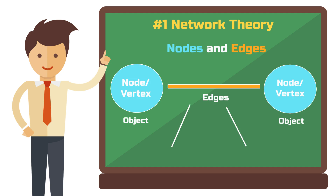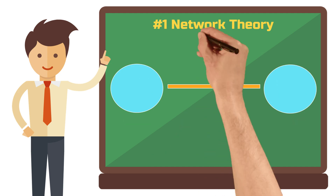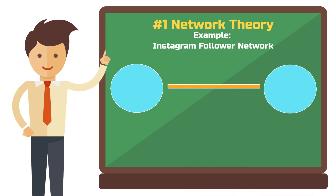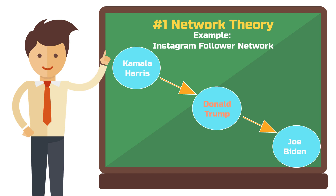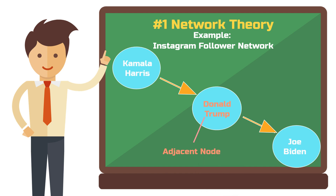A relationship can be either undirected or directed. Let's imagine our network represents the relationships between Instagram accounts of famous politicians. The nodes are the politicians and the edges can be, for example, the follower relationships between them. If Kamala Harris follows Donald Trump but he does not follow her back, there is a directed edge from Kamala Harris to Donald Trump, usually shown with an arrow. Kamala Harris is the starting node and Donald Trump is the ending node. If Donald Trump also follows Joe Biden but not Kamala Harris, Donald Trump is an adjacent node to both Kamala Harris and Joe Biden. However, Joe Biden is not an adjacent node to Kamala Harris.